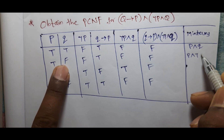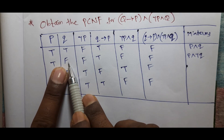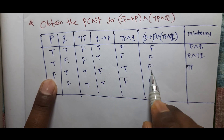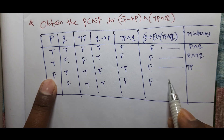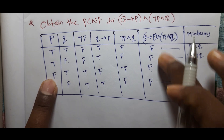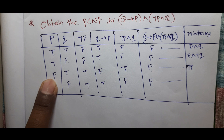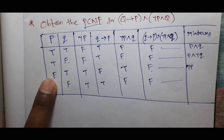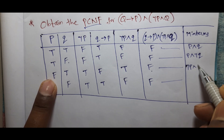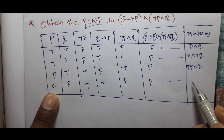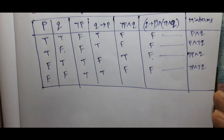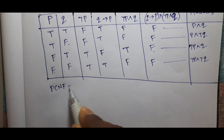Now we will use negation — that means negative negative. This is false here. This is false, but we still need to be concerned about the rows that evaluate to false. The truth gives us the PCNF.